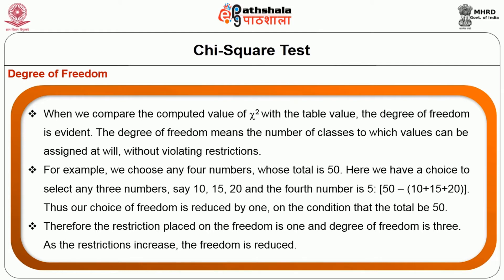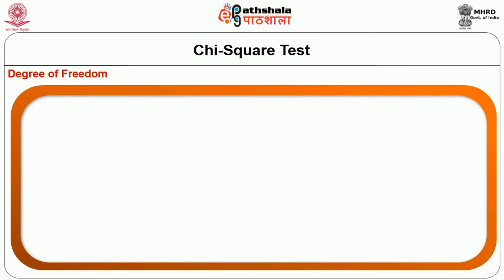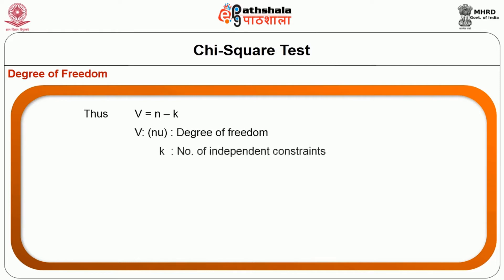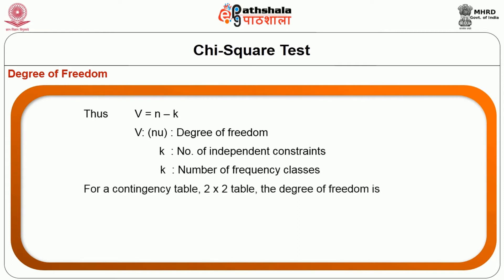As restrictions increase, freedom is reduced. Thus, degrees of freedom ν = n − k, where ν is the degrees of freedom, k is the number of independent constraints, and n is the number of frequency classes. For a contingency 2×2 table, the degree of freedom is ν = (c − 1)(r − 1) = (2 − 1)(2 − 1) = 1.